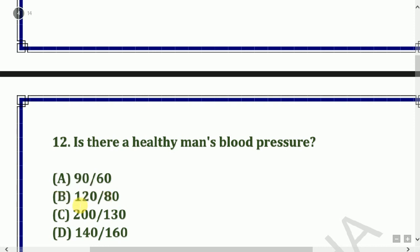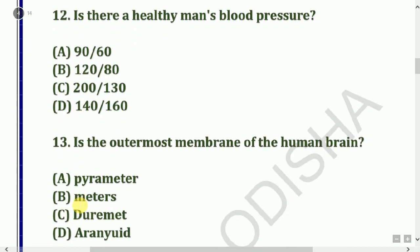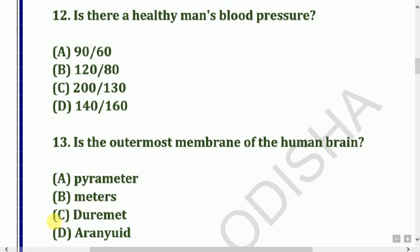Next question: Which is the outermost membrane of the human brain? The answer is Dura mater, which is the outermost membrane of the human brain.